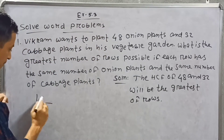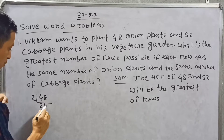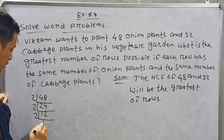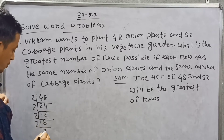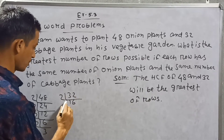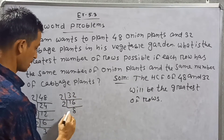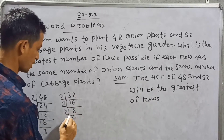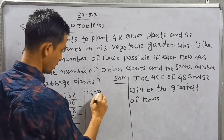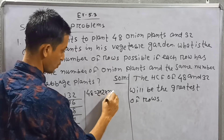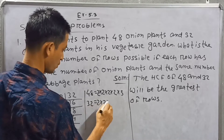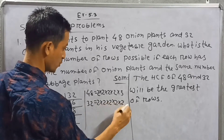For 48: 2 × 2 × 2 × 4 = 48, so 48 = 2 × 2 × 2 × 2 × 3. Now for 32: 32 = 2 × 2 × 2 × 2 × 2.